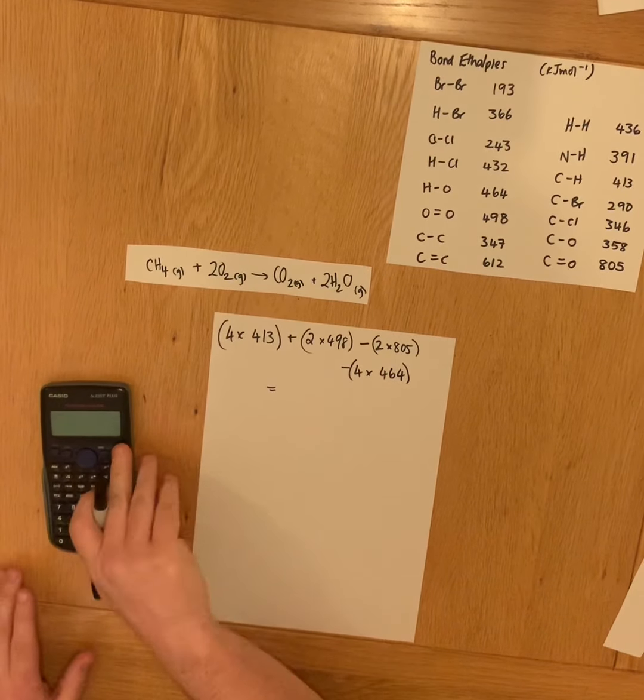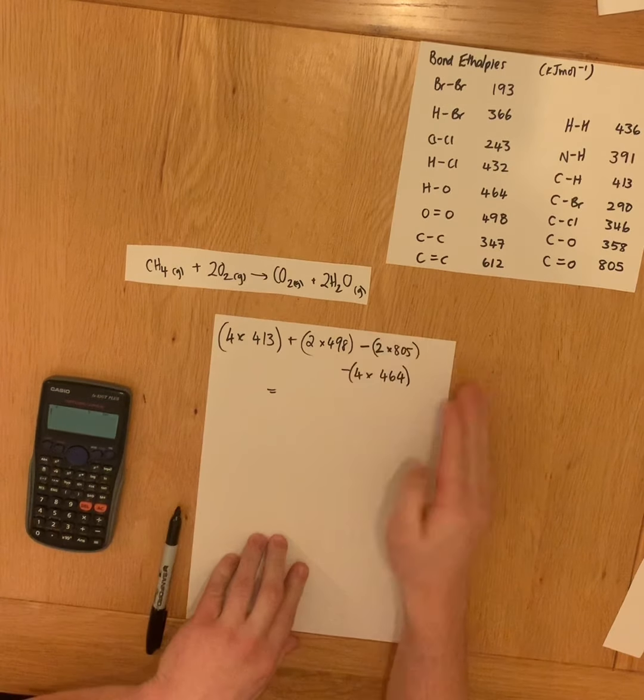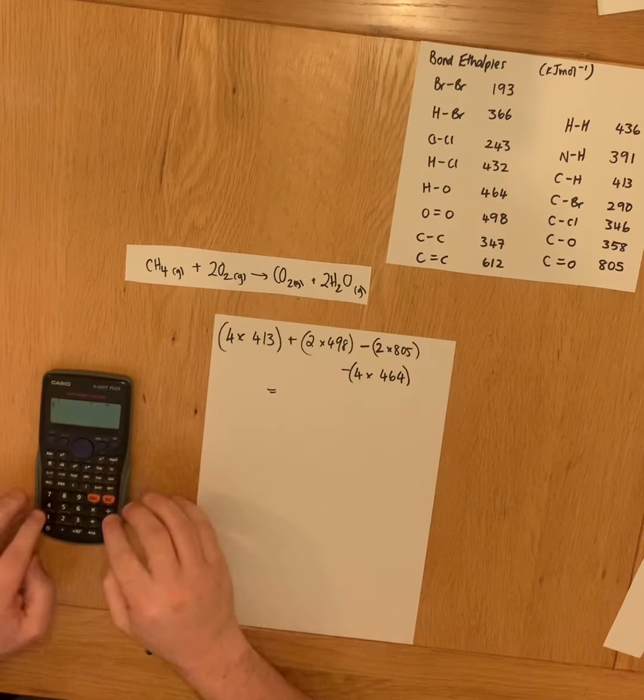So we pop all of that into our calculation. We have the sum of the bonds that we need to break, take away the sum of the bonds that we're going to form.